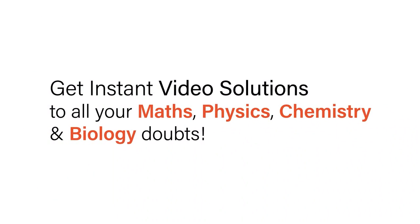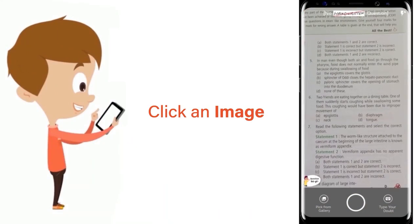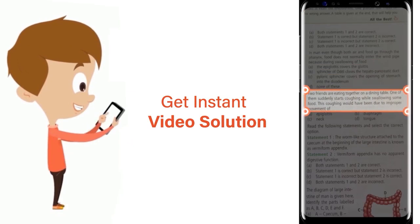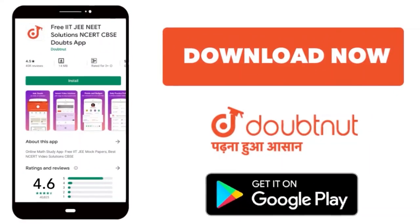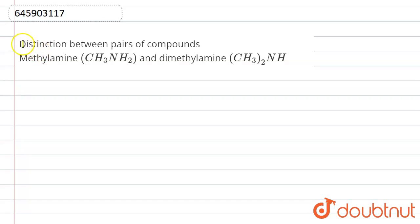With Doubtnet, get instant video solutions to all your maths, physics, chemistry, and biology doubts. Just click the image of the question, crop the question, and get instant video solution. Download Doubtnet app today. Hello students, the question is distinction between pair of compounds, methylamine and dimethylamine.